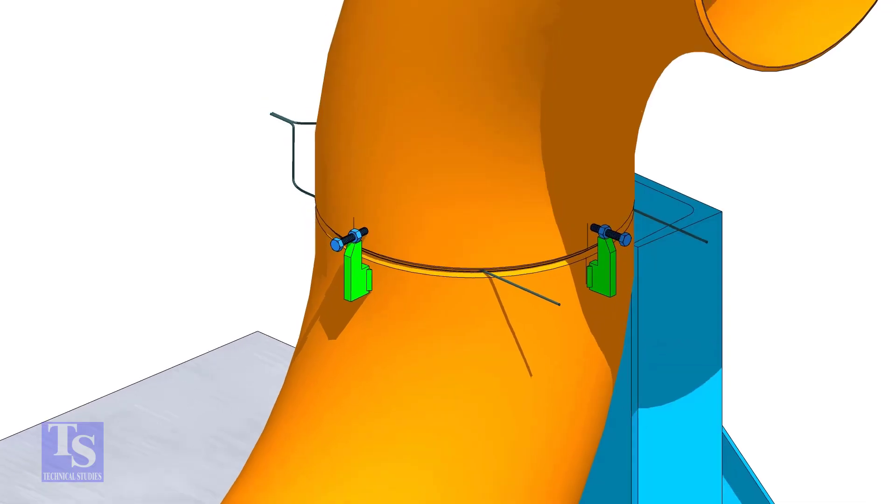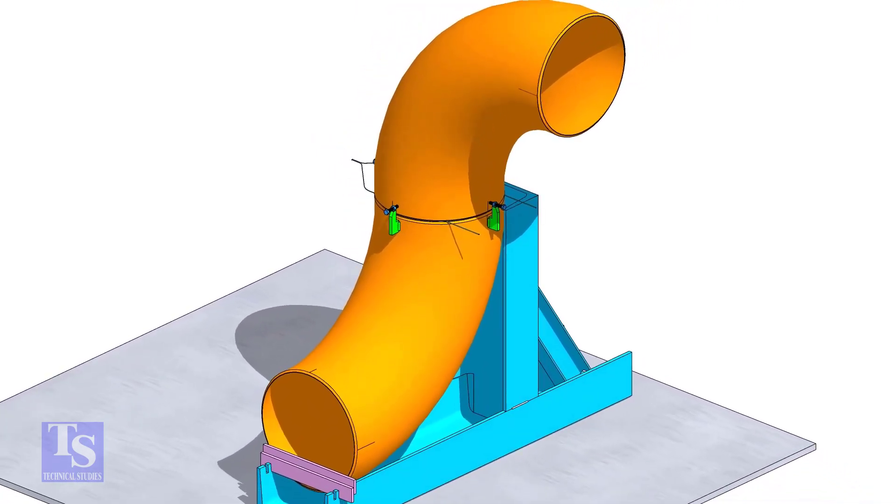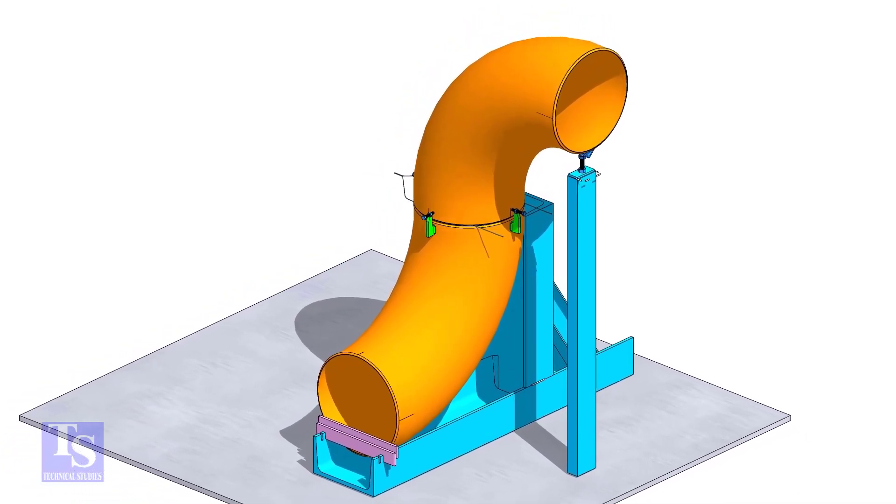Put the other elbow and match the center lines in which direction you want to rotate the elbow. Tack weld an adjustable support below this elbow and adjust the height.